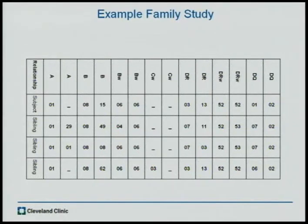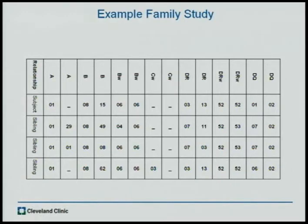In order to understand what a family study is, every person has two of each HLA locations — A, B, or whatever. This is what serology looks like. In order to determine what the haplotype is, the haplotype is basically just a strand of DNA going across A, B, C, DRD, Q, that comes from either your mother or your father.